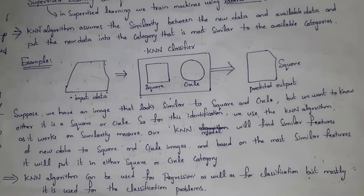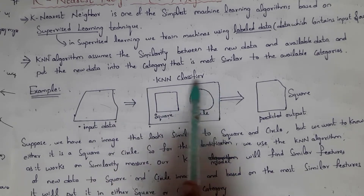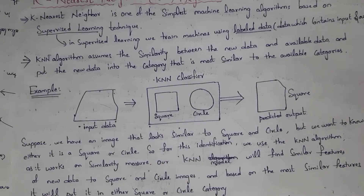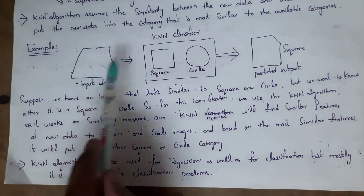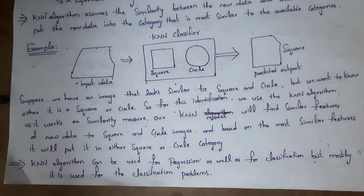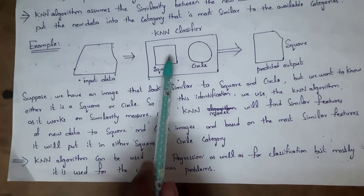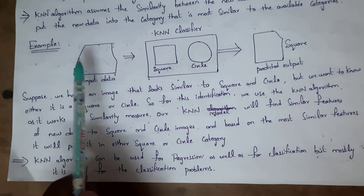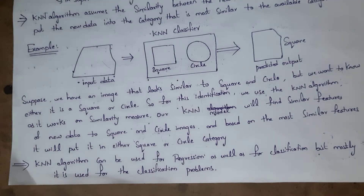KNN finds similar features between the new data and the available categories. Based on the most similar features, the new data is placed either in square or circle. This input data is more similar to square, so it is placed in the square category. KNN can be used for both regression and classification, but it is mostly used for classification, so we also call it the KNN classifier.